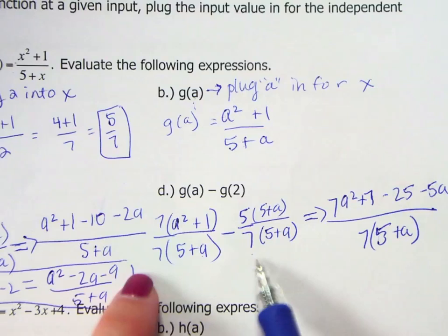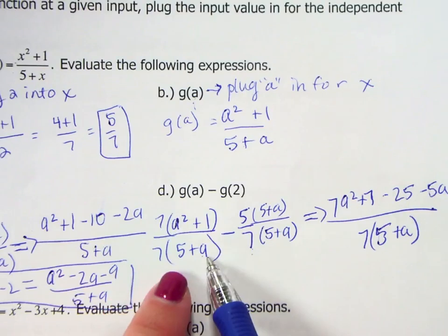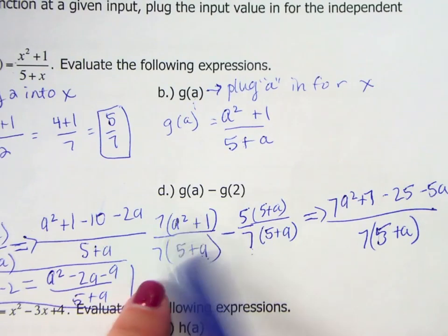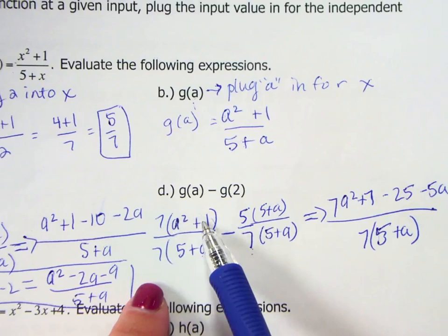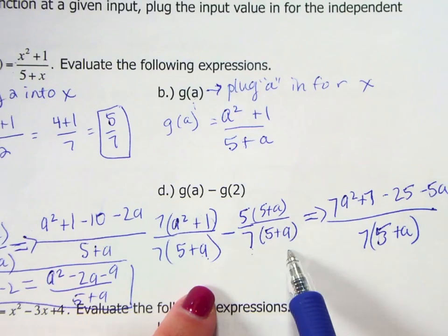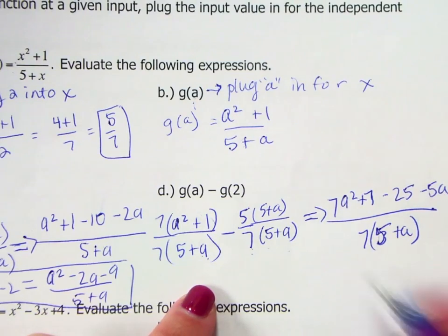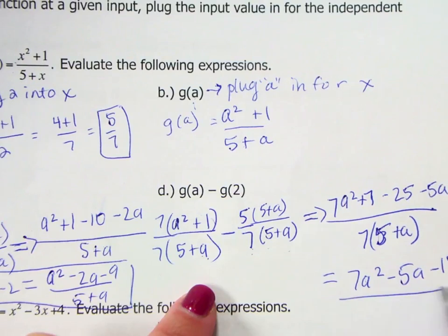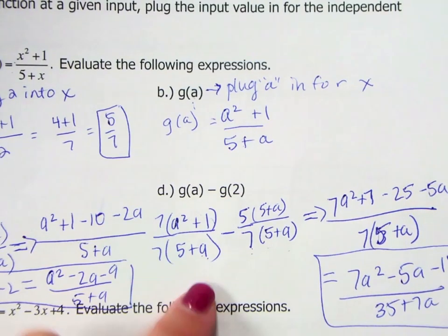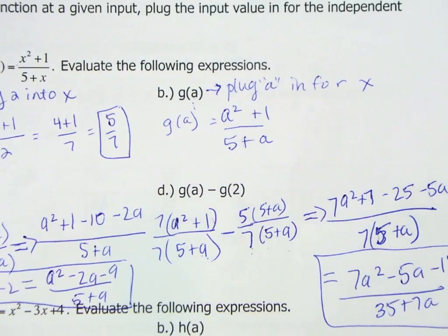So again, our common denominator would be the 7 and the 5 plus a factor. So the first term needed that factor of 7. I distributed that on top. There we go. And then we can do a little bit of simplification here. That would be 7a squared minus 18, I believe, over 35 plus 7a. Alright.